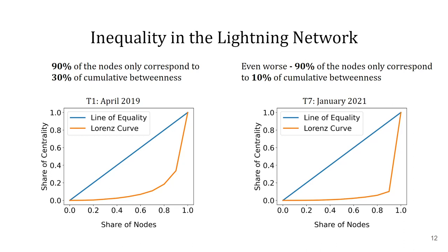Looking at April 2019, we can see a good example of an unequal distribution where 90% of the nodes only correspond to 30% of the cumulative betweenness of all nodes — a fairly uneven distribution. In a perfect world where all nodes share the same betweenness, the distribution would look like the blue line. However, this is not the case, and consequently this indicates an extraordinarily high network centralization where 90% of the shortest paths in the network lead only through 30% of the nodes.